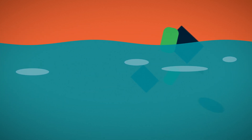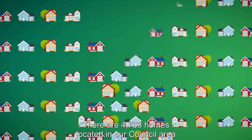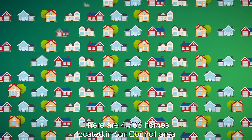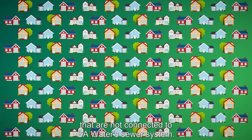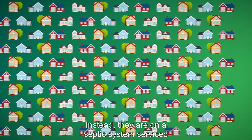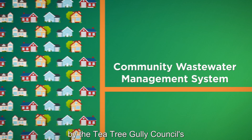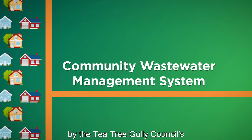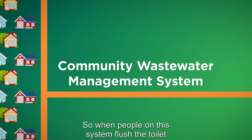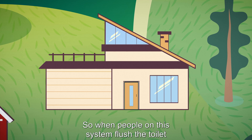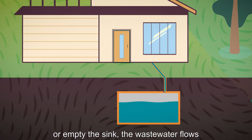There are four thousand seven hundred and sixty-three homes located in our council area that are not connected to SA Water's sewer system. Instead, they are on a septic system serviced by the Tea Tree Gully Council's Community Wastewater Management System. When people on this system flush the toilet or empty the sink, the wastewater flows into the septic tank on their property.